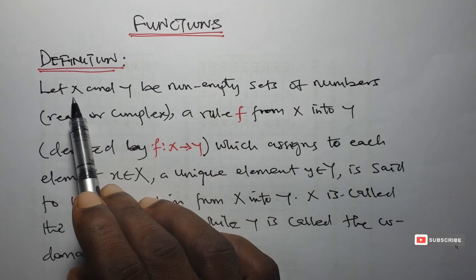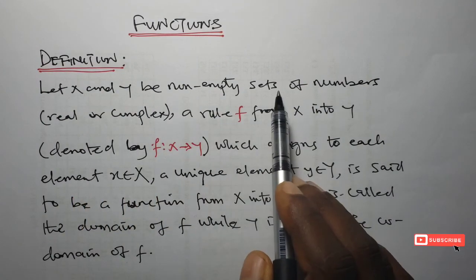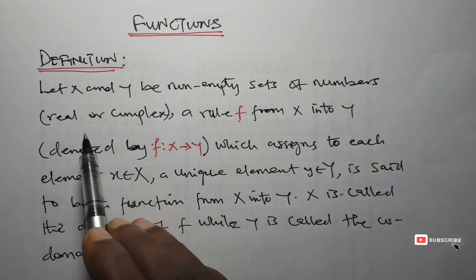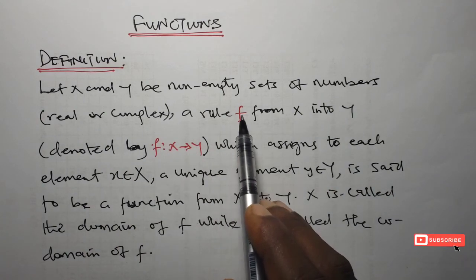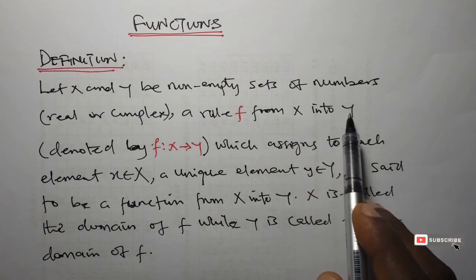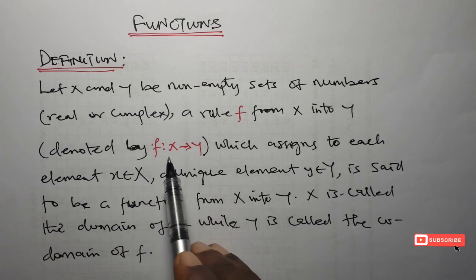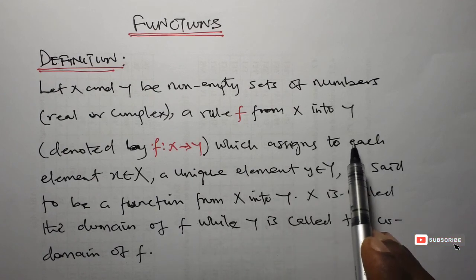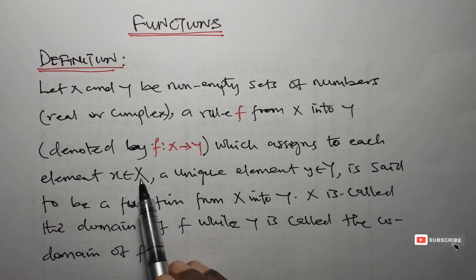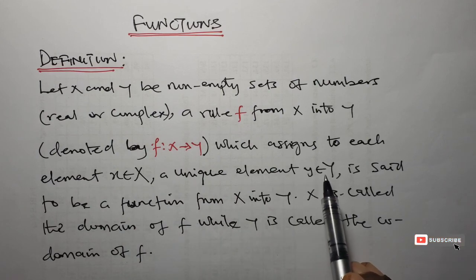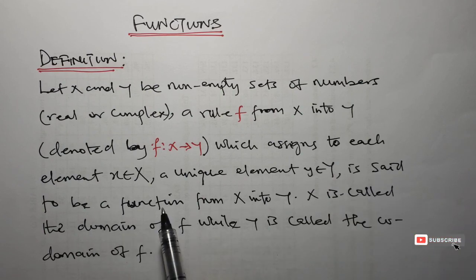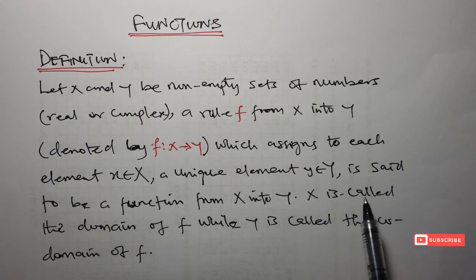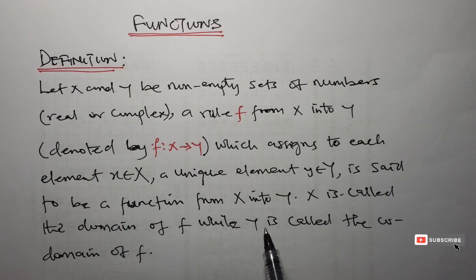Definition. Let x and y be non-empty sets of numbers. These numbers could be real or complex. A rule f from the set x into the set y, denoted by f such that x goes to y, which assigns to each element x in set x a unique element y in set y, is said to be a function from x into y. The set x is called the domain of f, while the set y is called the co-domain of f.